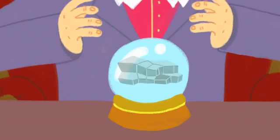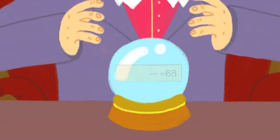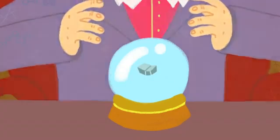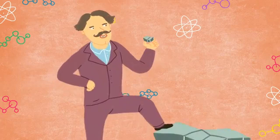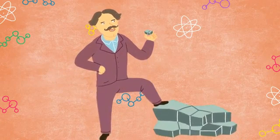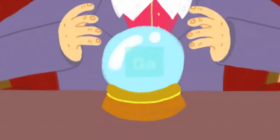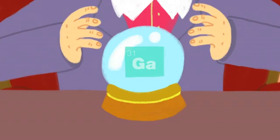Mendeleev could predict all of these things simply from where the blank spot was and his understanding of how the elements surrounding it behaved. A few years after this prediction, a French guy named Paul-Emile Lecoq de Bois-Baudrin discovered a new element in ore samples and named it gallium after Gall, the historical name for France. Gallium is one step away from aluminum on the periodic table. It's eka-aluminum.